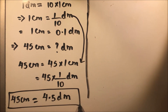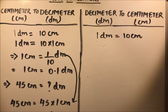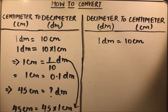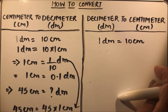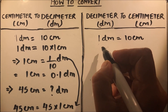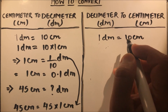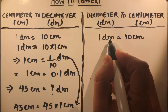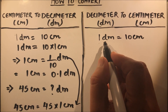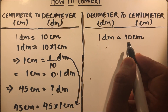This is how, by dividing by 10, we can convert centimeters to decimeters. Now we will learn how to convert decimeters to centimeters, which is very easy — we just need to multiply by 10. The basic relation is: one decimeter equals 10 centimeters.